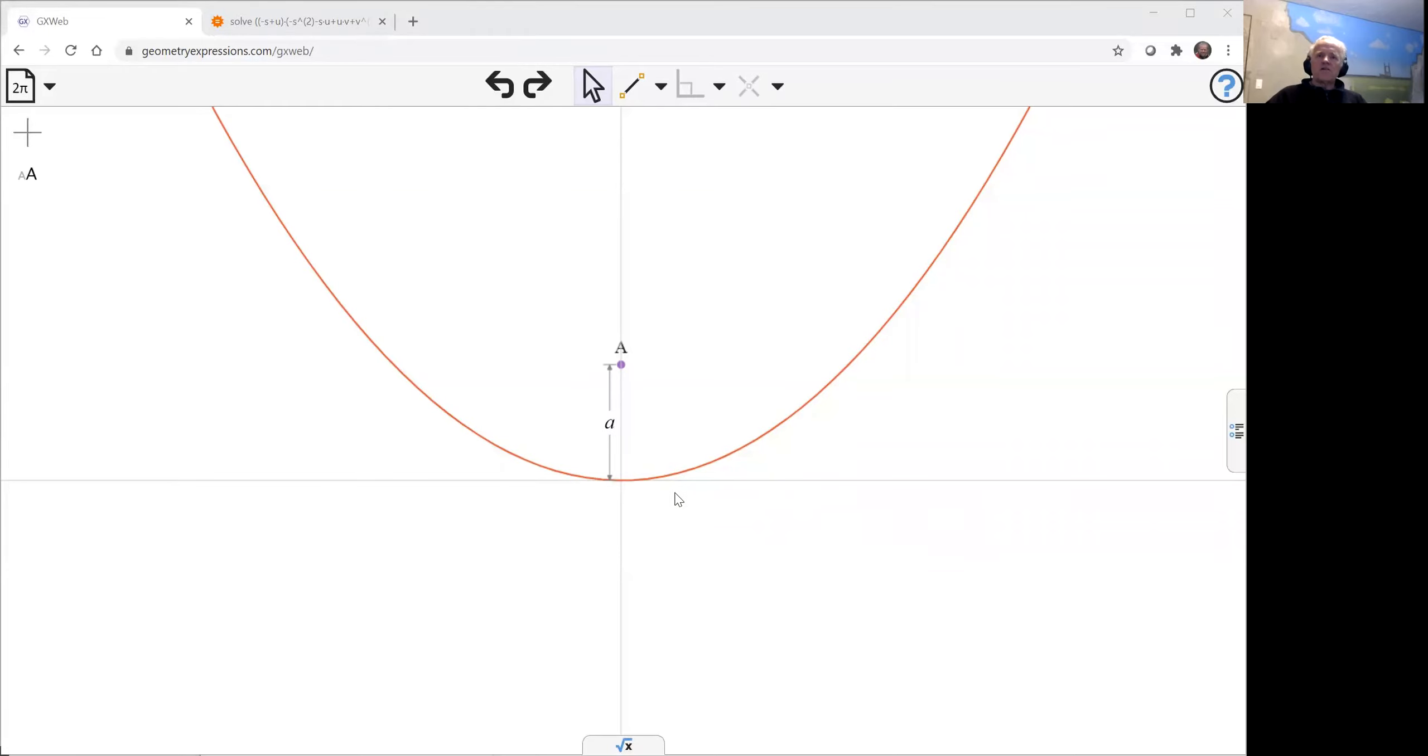I've got my parabola already drawn inside GeoGebra Web, and we see that the vertex is the origin. So to create a normal, we have to create first a tangent.